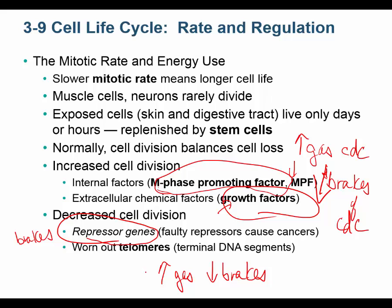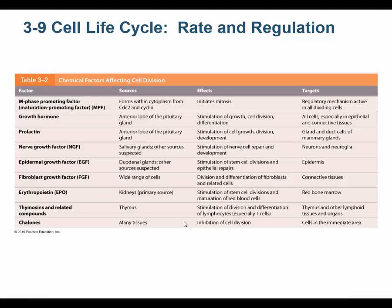You can be predisposed to cancer. You could be born with your gas always being on, or your gas could be normal and you could be born with your brakes always being off. A normal person needs two mutations in their DNA — a mutation that turns the gas on all the time and a mutation that turns the brakes off. A person born with one of them already having occurred is predisposed to cancer because they're only waiting for one more mutation to occur.